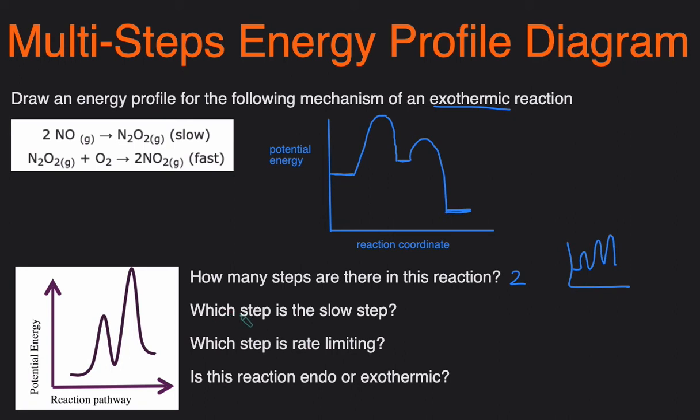Then it's asking us which step is the slow step. The slow step is the step that has the highest activation energy. We can label the activation energy of the first step and then the activation energy of the second step would be this. Whichever step has the higher activation energy is going to be the slow step. We can see that the second peak had the higher activation energy so we'll say step two is the slow step.